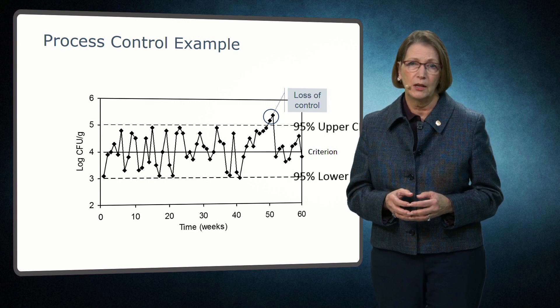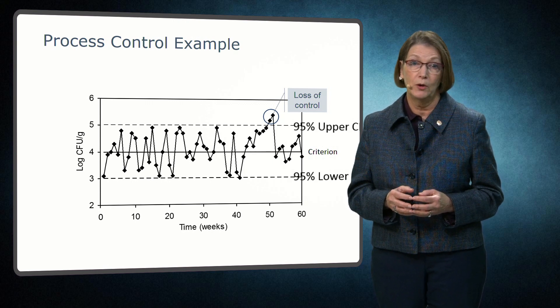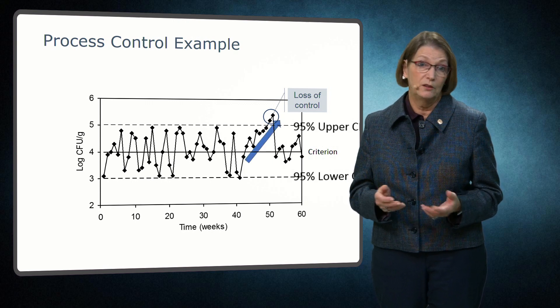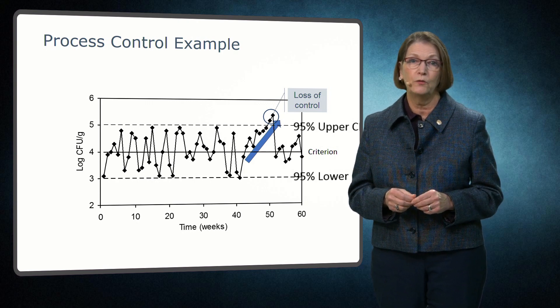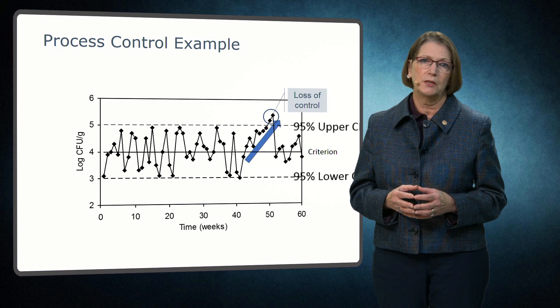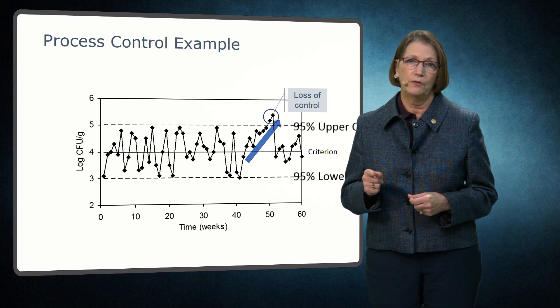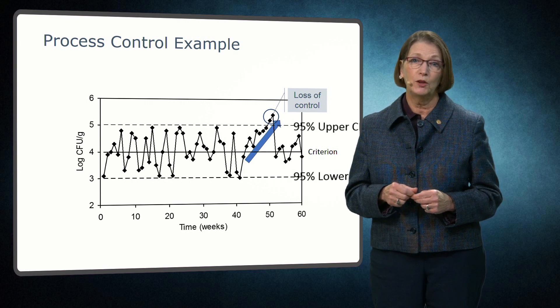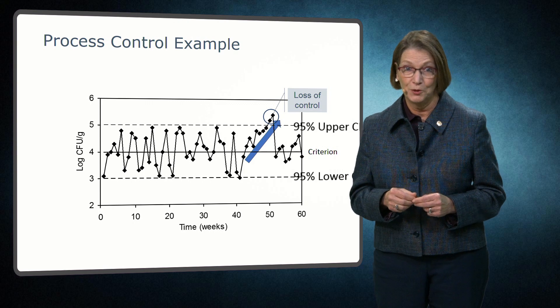A proper verification activity would have included review of the data to observe for trends. For example, an increasing trend began in week 42 and continued with a few reductions up to loss of control at week 50. It is strongly encouraged that verification data for process control be evaluated for trends to enable corrections before loss of control.